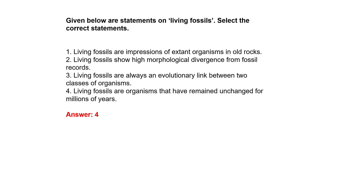Next: given below are statements on living fossils – select the correct statement. Option 1: living fossils are impressions of extant organisms in old rocks. Option 2: living fossils show high morphological divergence from fossil records. Option 3: living fossils are always an evolutionary link between two classes of organisms. Option 4: living fossils are organisms that have remained unchanged for millions of years. Option 4 is the right answer.